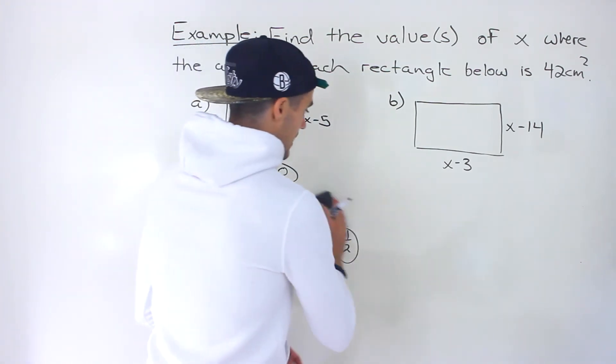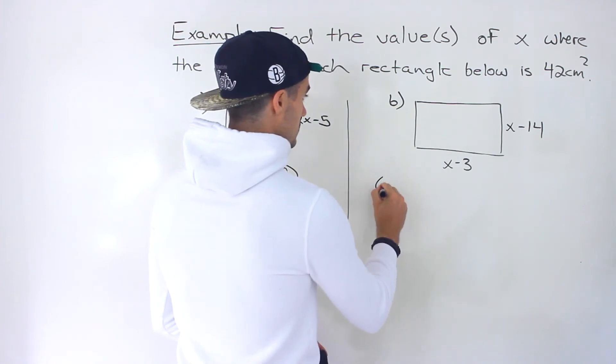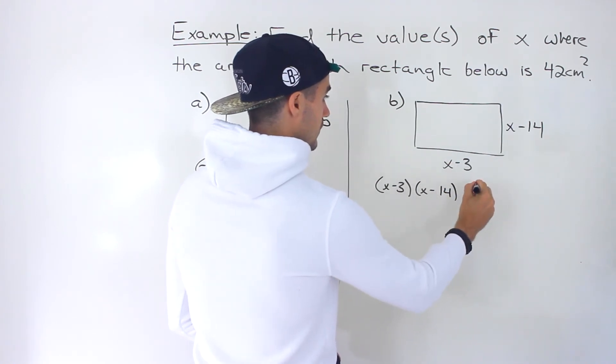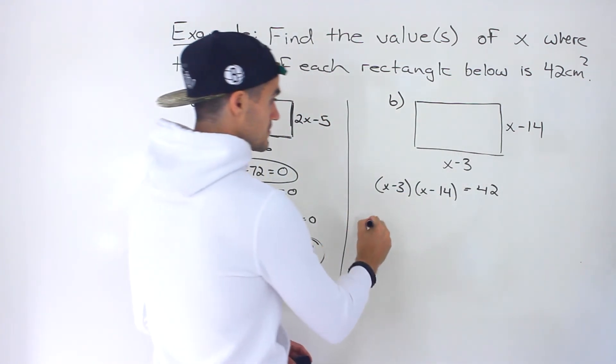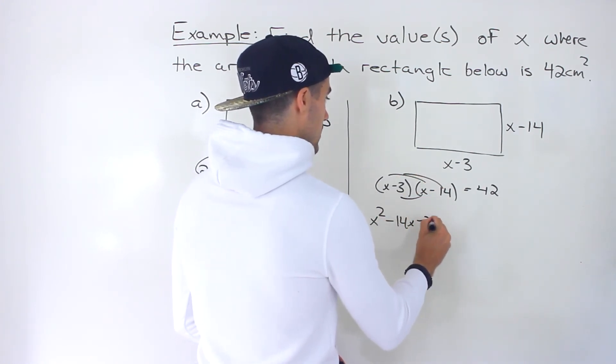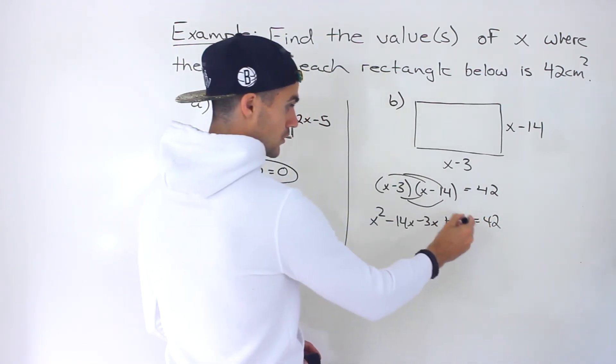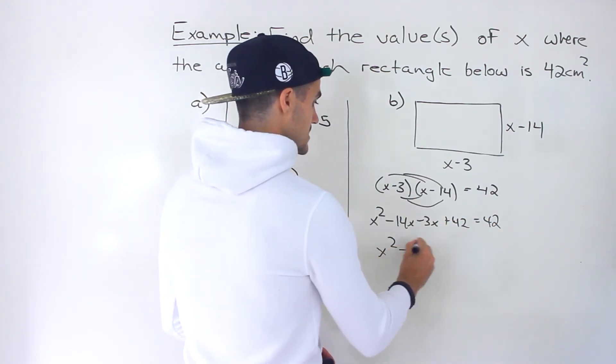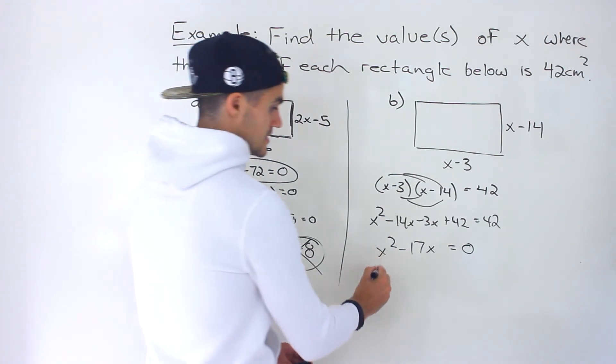So that's part a and then same thing for part b. I actually think part b is going to be easier to work with just because we don't have a coefficient in front of any of the x's. So basically length times width has to equal that area of 42. And so expanding over here we get 14x minus 3x positive 42 equals 42. Bring the 42 over. Notice that this and this will cancel out because you'll have 42 minus 42. So you'd end up with x squared minus 17x equaling 0 like that. And then solving this easy to factor.